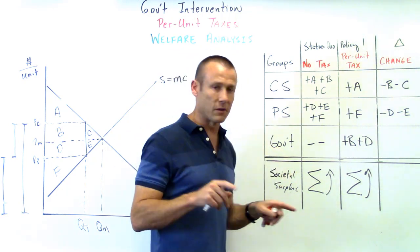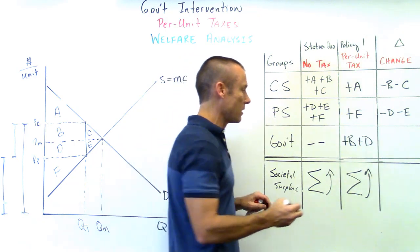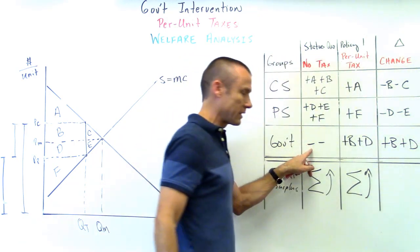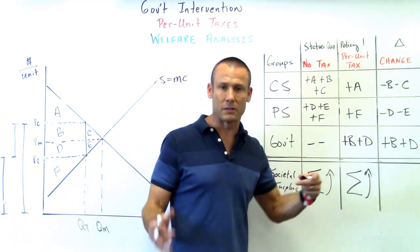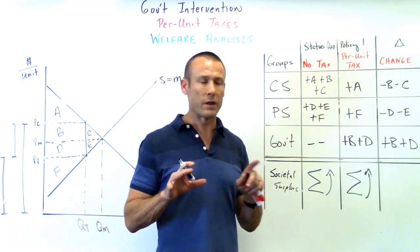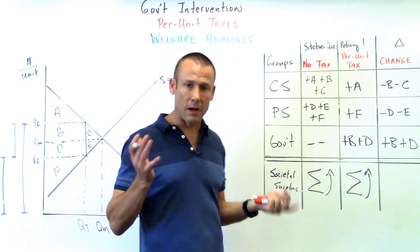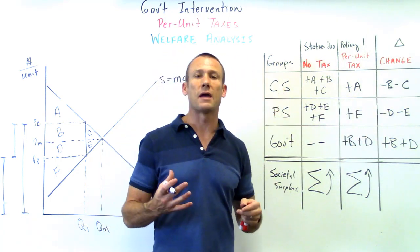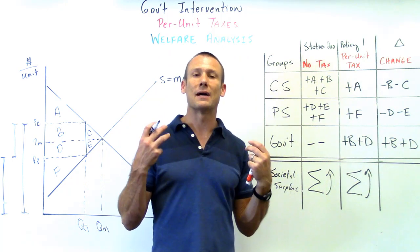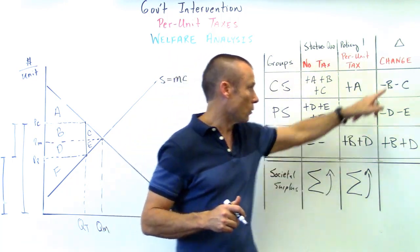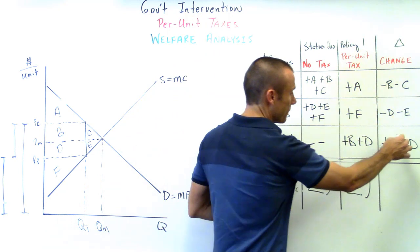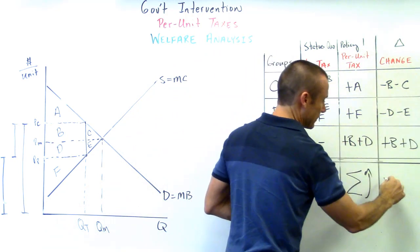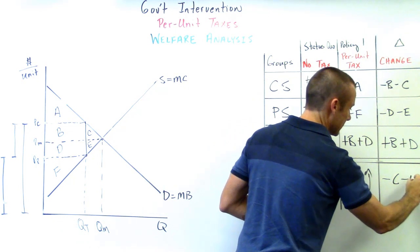Government, the delta column - they're going to get plus b plus d. Of course they got nothing pre-tax, they get plus b plus d after the tax. You can say what's the impact on these three groups, but you're also going to be asked what's the impact on society. We're going to sum these up - the b's cancel, the d's cancel, negative c negative e drops down.